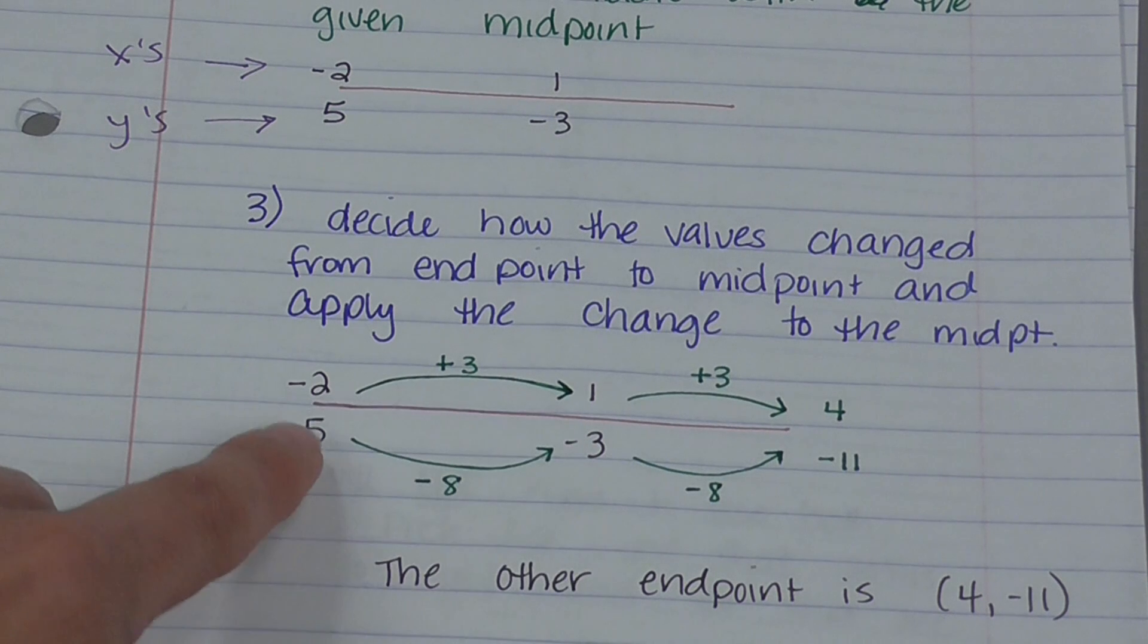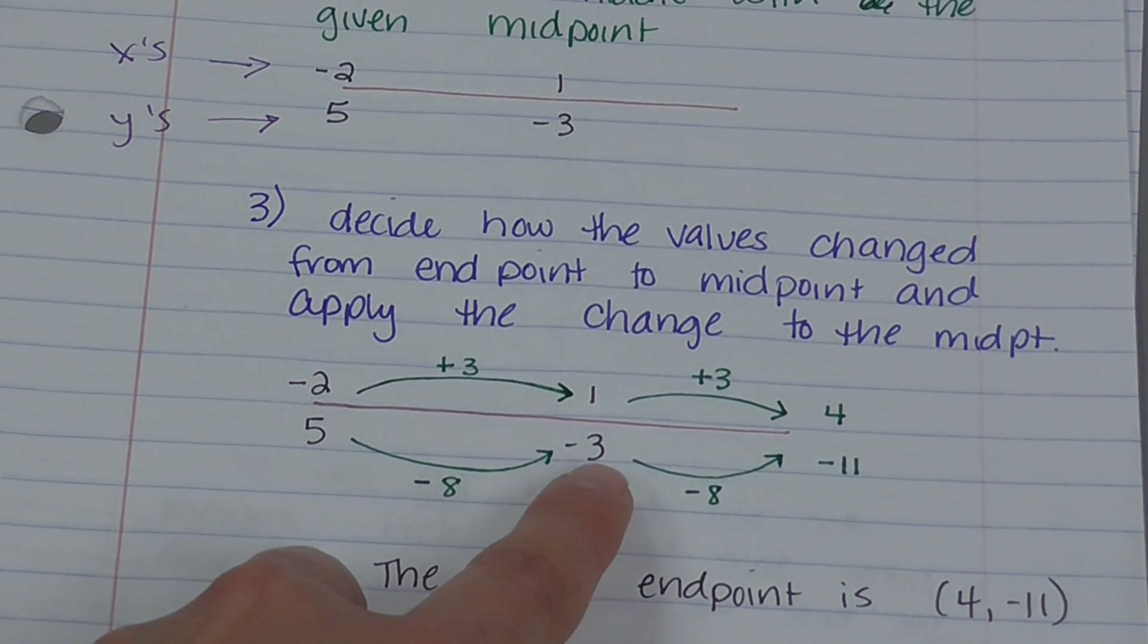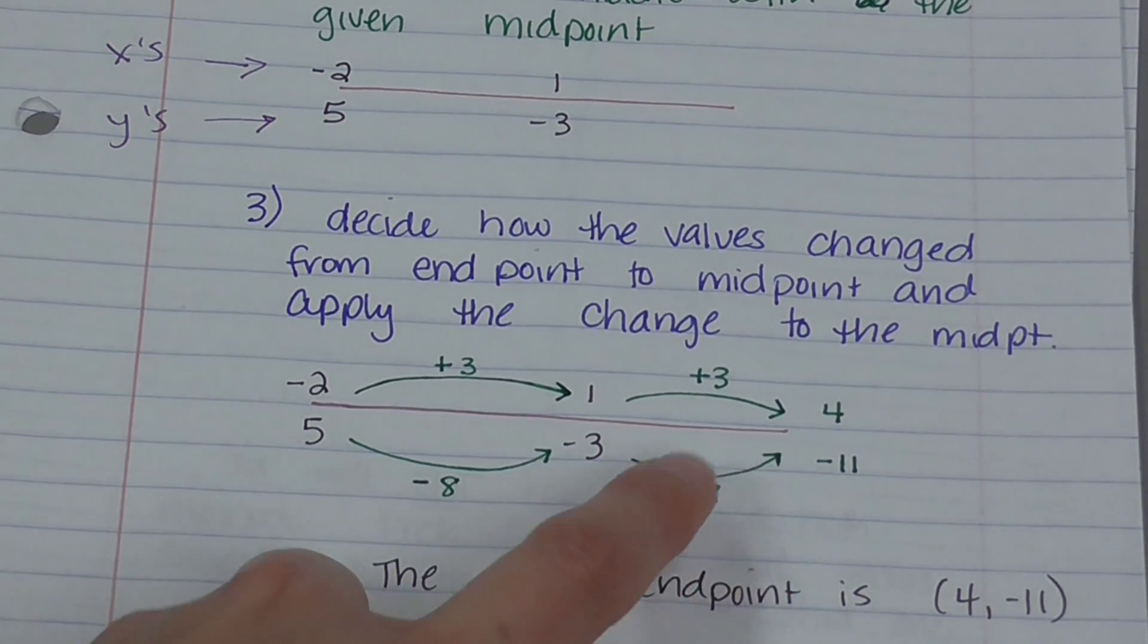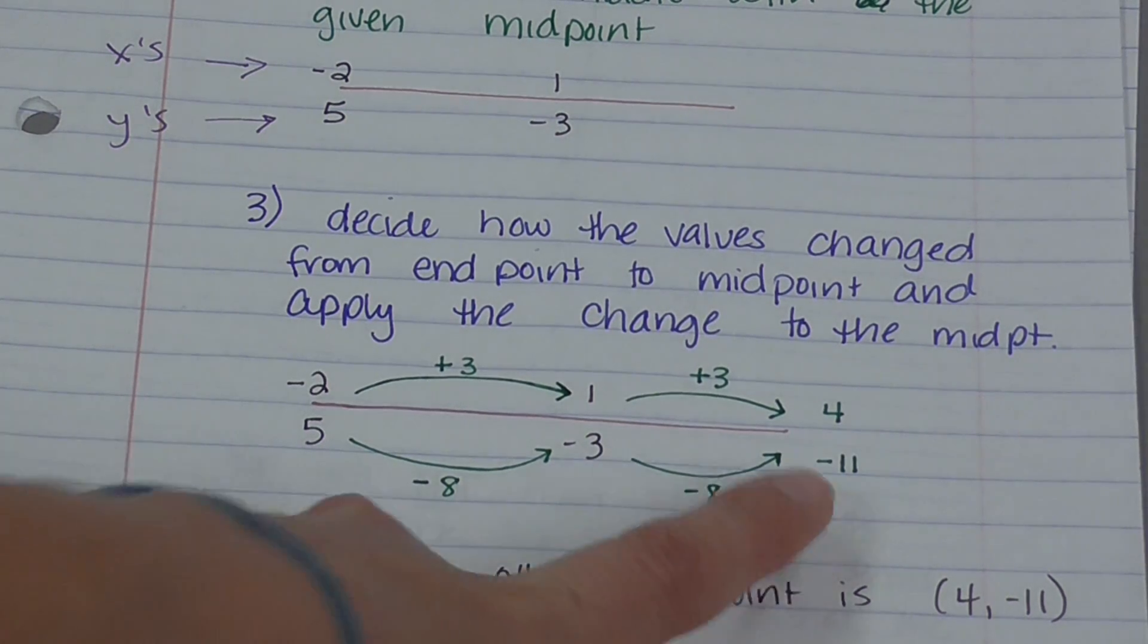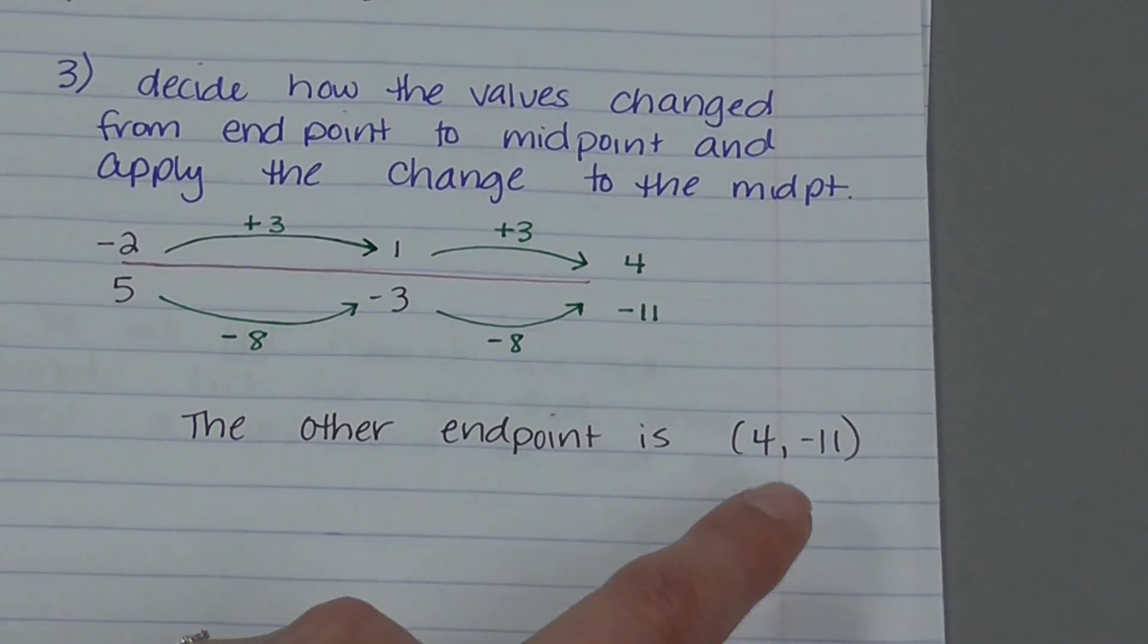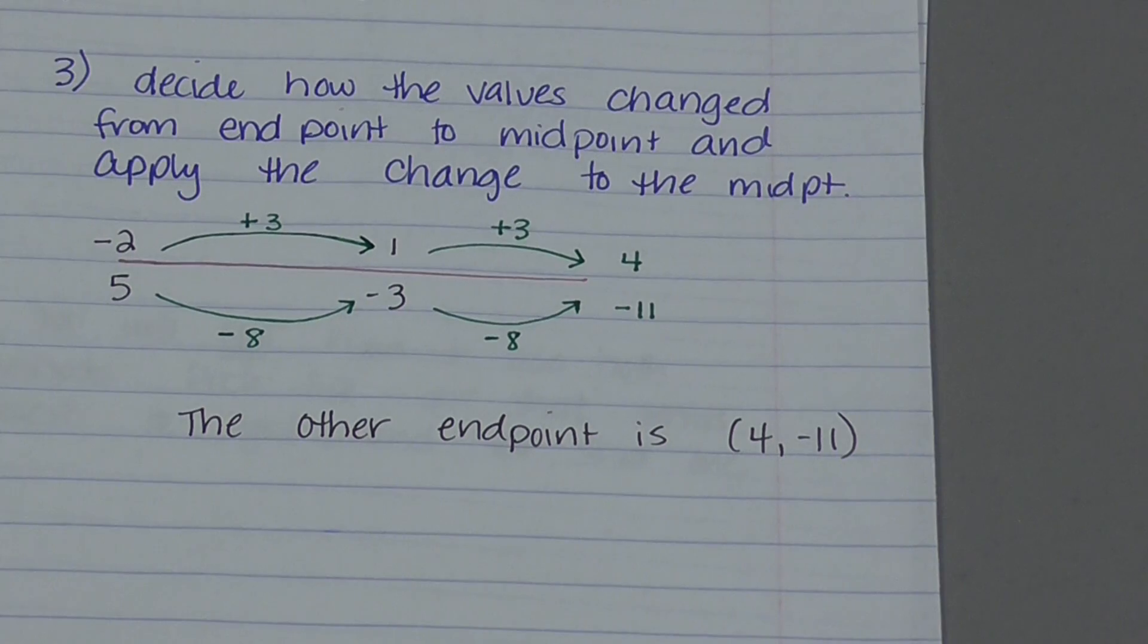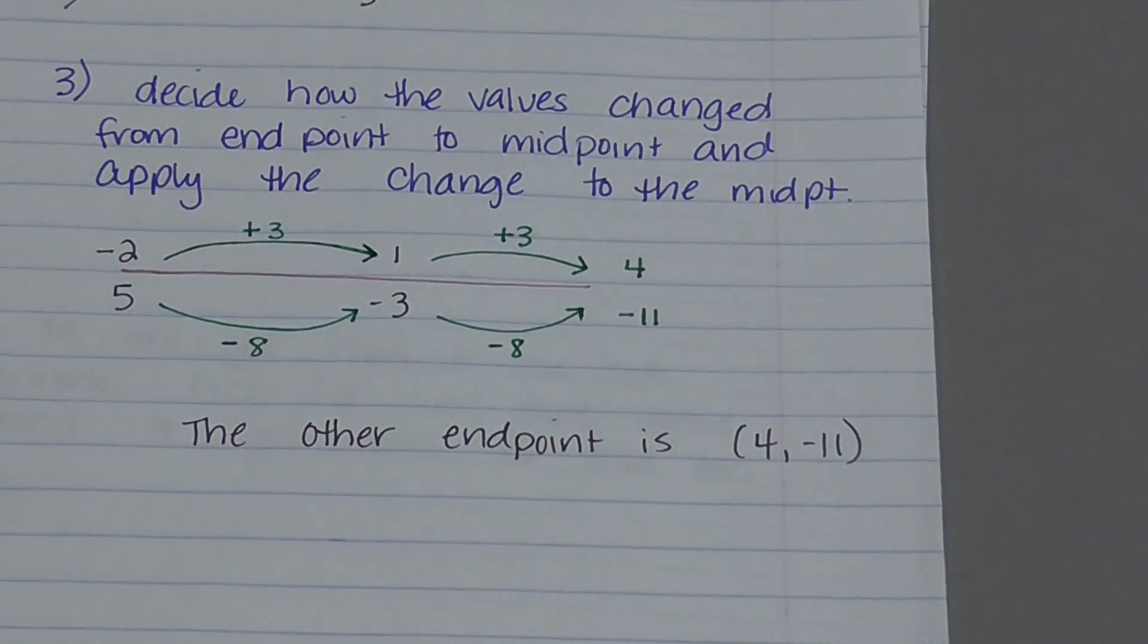From 5 to get to negative 3, I had to subtract 8. And then I need to subtract 8 again. So negative 3 minus 8 is negative 11. So my other endpoint is 4, negative 11. Notice we used two different methods. I ended up in the same place.